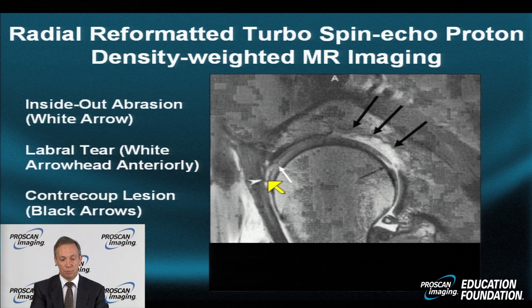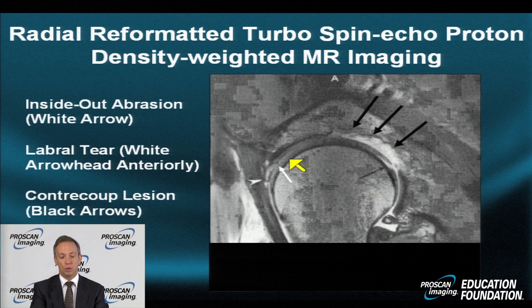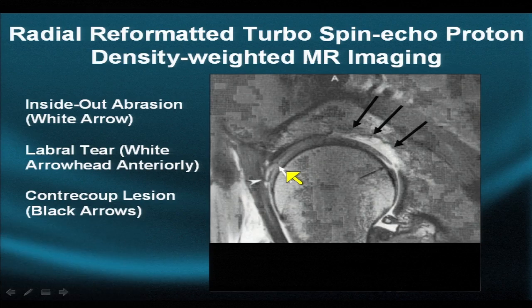The patient also has a hyper-intense labral tear, this white thorn representing the tear, and some inhomogeneous signal replacing the normal gray areas of hyaline cartilage, producing what's known as a marginal erosion or inside-out abrasion, seen with a white arrow.